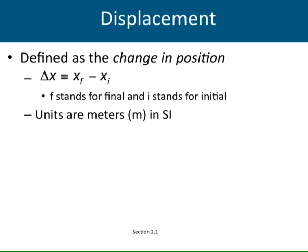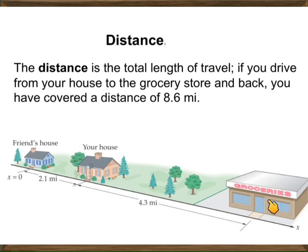Displacement is something else. Although distance and displacement have the same units — both have units of length — displacement is defined as the difference between your final position and your initial position. In the previous example, if you start from your house, go to the grocery store, and come back to your house, your displacement is zero, because you end up where you started. But the distance is still 8.6 miles. That is the key difference.